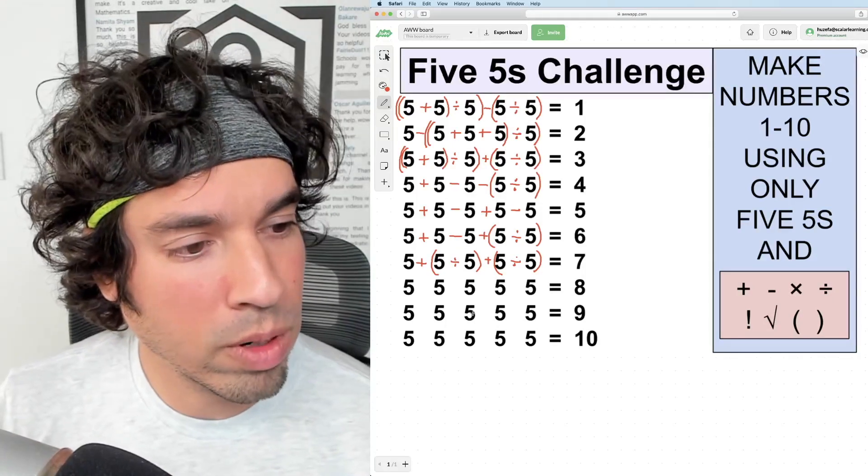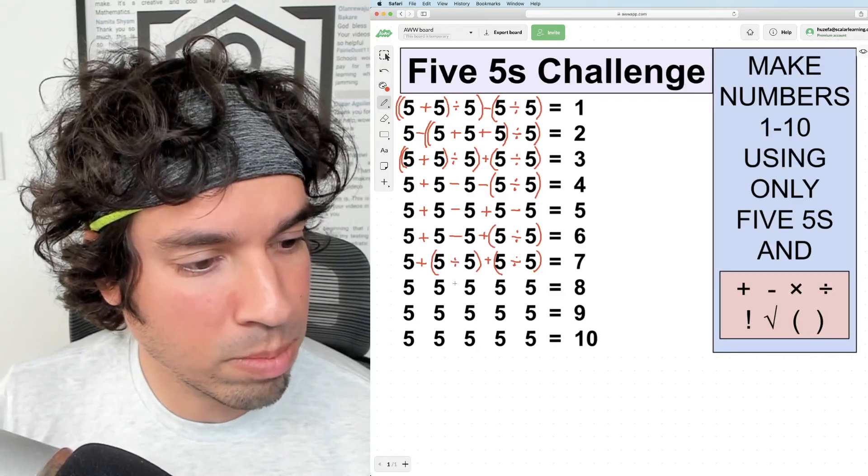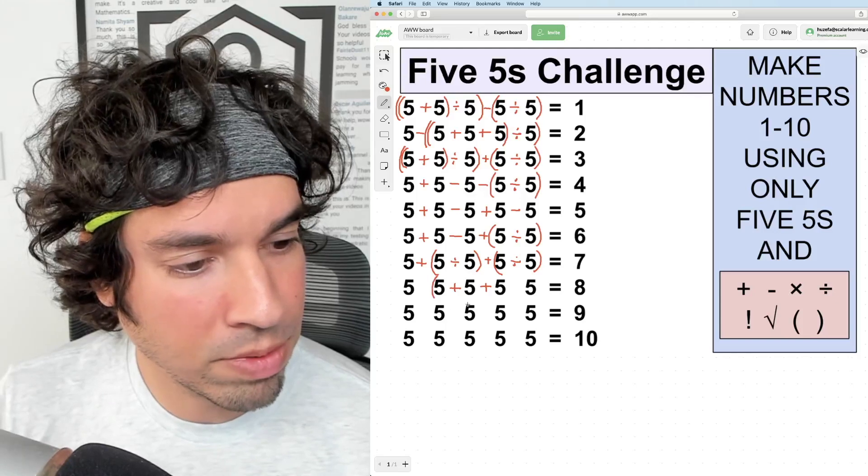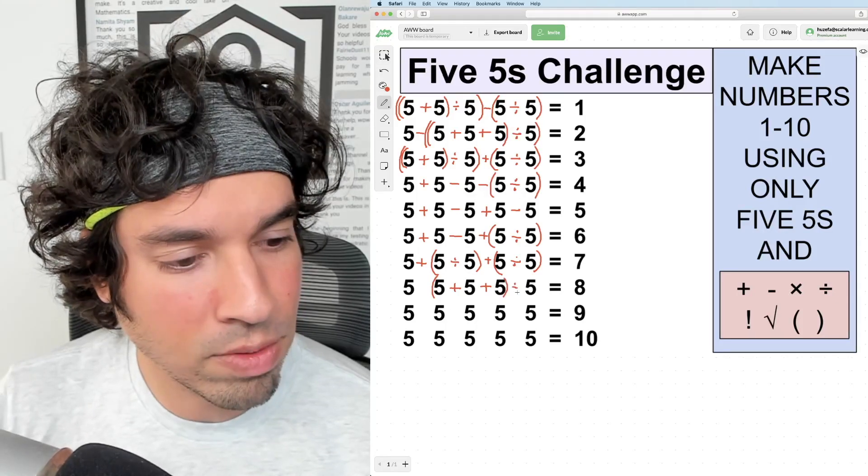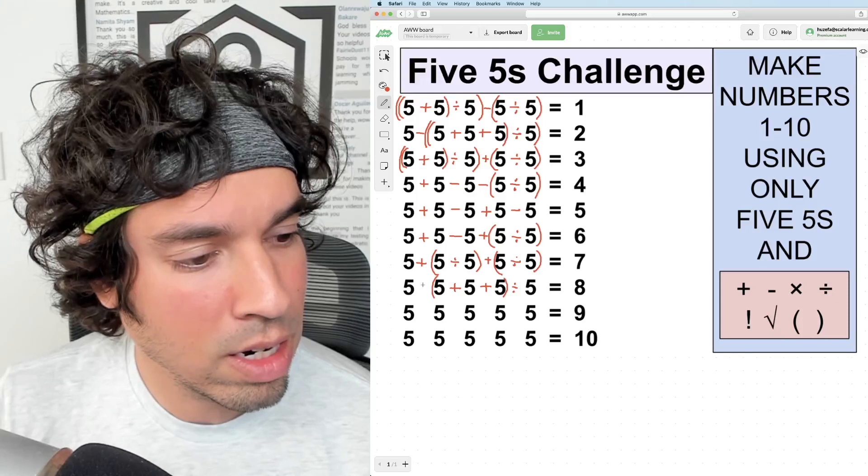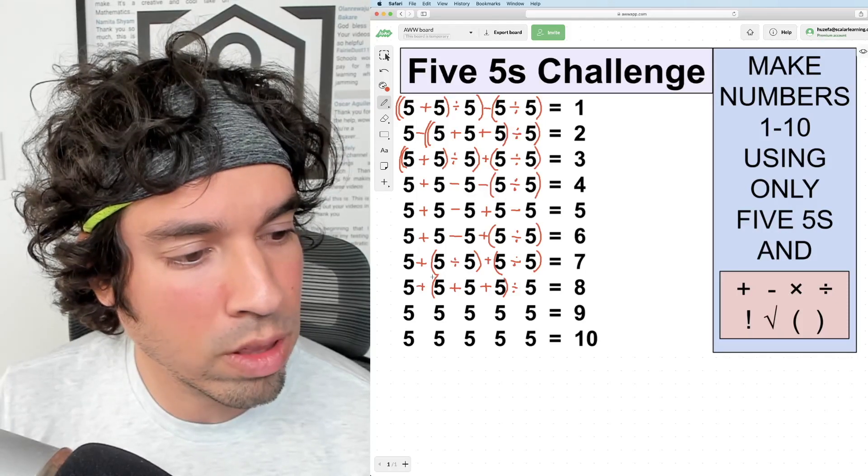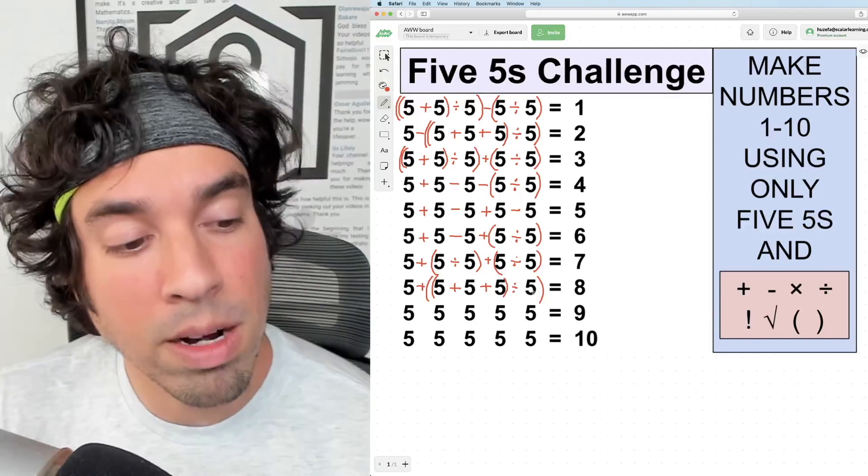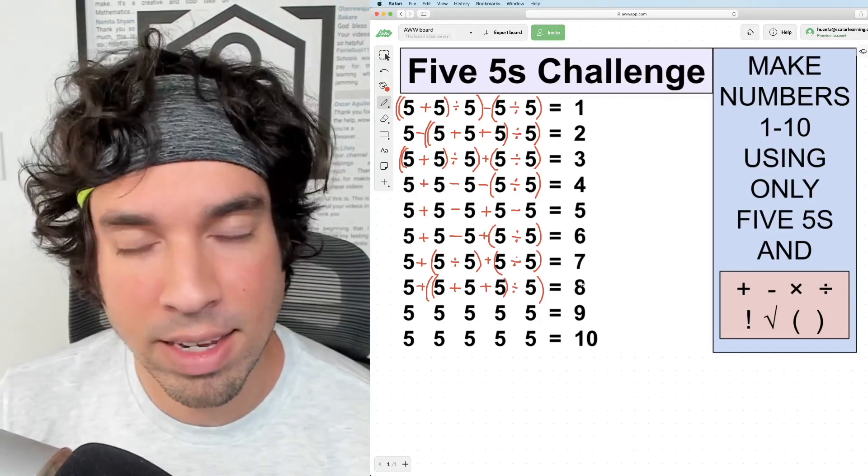Next let's go to eight. So we already learned how we can get a three. We can simply add five plus five plus five. That gives me fifteen. And now again, we're going to divide that fifteen by five and we get a three. And then I'm going to add this whole thing to that five up front. So it's fifteen divided by five, which is three, plus five over there gives me eight.